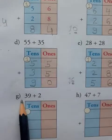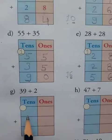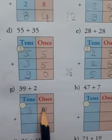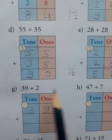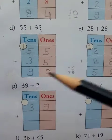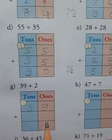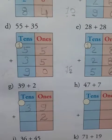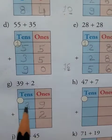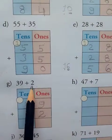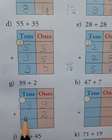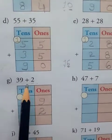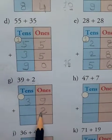Next: 39 plus 2. First of all, you write 39. Where do you write 2? It is 2 ones, so you write 2 in the ones place. Don't write 2 in the tens place. 2 ones — so you write 2 in the ones place.